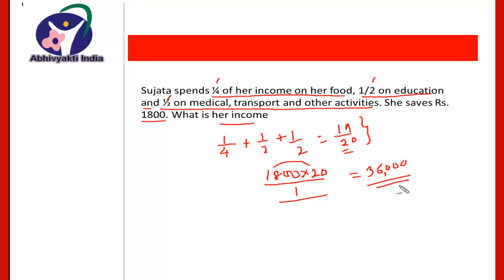And therefore, Sujata's income is rupees 36,000, and when she spends 1/4 of her income on food, half of her income on education, and half of her income on the other activities, then she saves 1,800 and her income is 36,000 rupees.